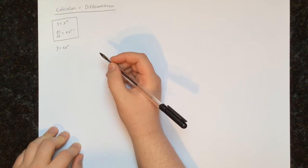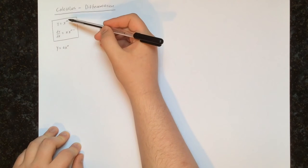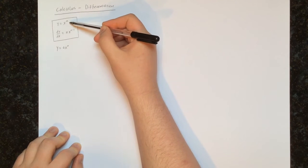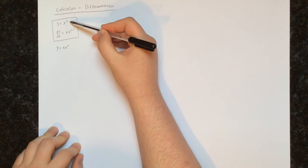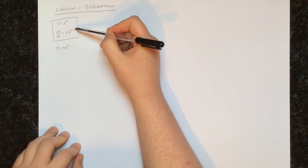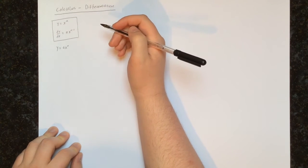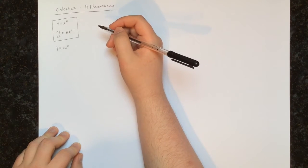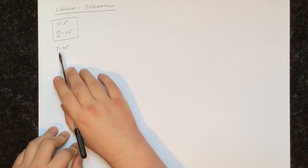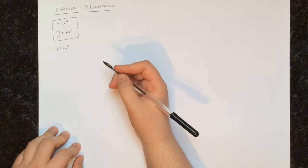We're going to deal with this situation in exactly the same way. When we're given y equals x to the n, what we do is multiply by the power of x, and then reduce the power of x by 1. In this case, we want to do exactly the same thing: multiply by the power of x, and then reduce the power of x by 1.